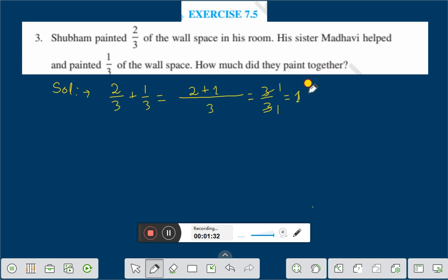Or 1 means whole. Right? How much did they paint together? Therefore they painted the whole wall.